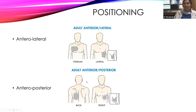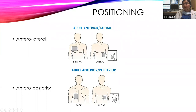For anteroposterior placement, the posterior pad goes at the infrascapular region (right or left side) and the anterior pad at the cardiac apex. Anteroposterior is used mainly in children, because the smaller chest size means pads can overlap, and also in patients with implantable devices to avoid shunting current. Both positions are equally efficacious; anterolateral is preferred for ease of placement.